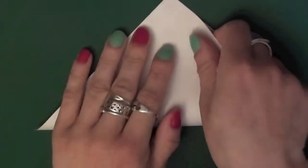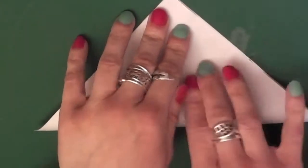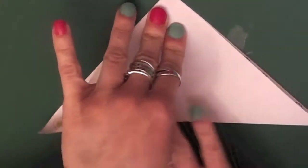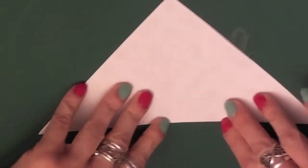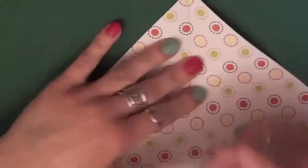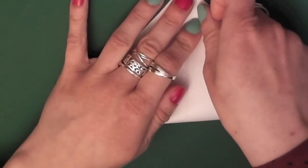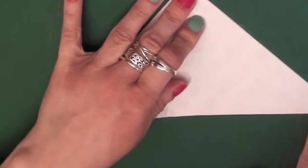What you want to do is fold this into a triangle. Make sure everything is nice and even. Fold the opposite with it. Even it all up.